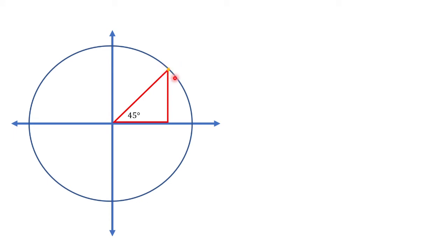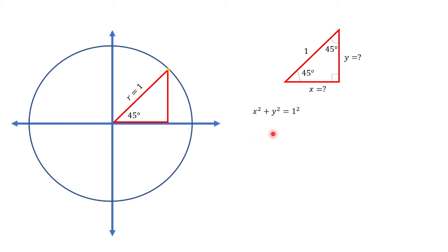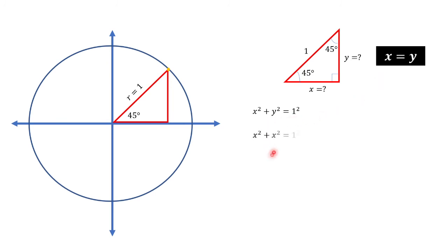How about the coordinates of this point with an angle of 45 degrees? Let us identify the lengths of these two sides. By the Pythagorean theorem, we can represent it as x² + y² = 1². What we see here is an isosceles right triangle, where the lengths of the two sides are equal — we can say that x = y. Therefore, I can substitute x for y, giving x² + x² = 1², which simplifies to 2x² = 1. Dividing both sides by 2, we get x² = 1/2.